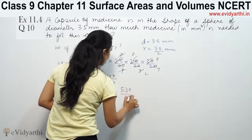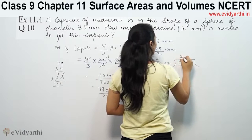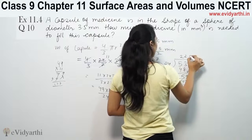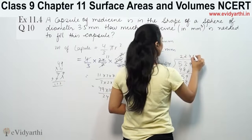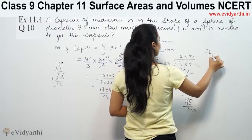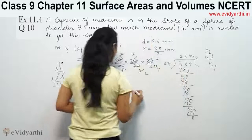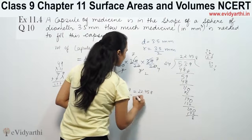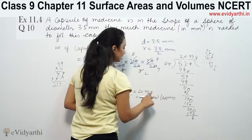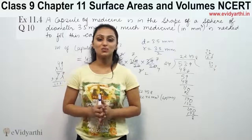So we get 529 by 24. Dividing 529 by 24 gives 22.458. So the volume is approximately 22.46 cubic millimetres. This was question number 10 from exercise 3.8, and this was the last question from surface areas and volumes.